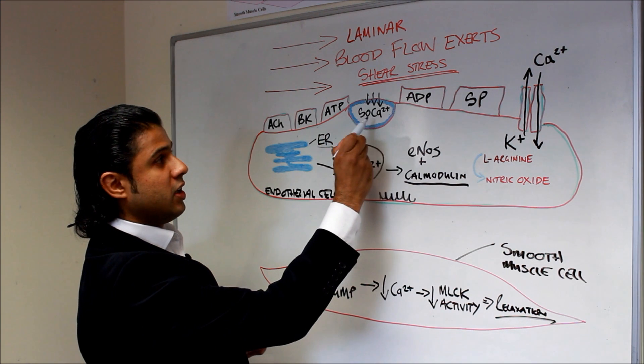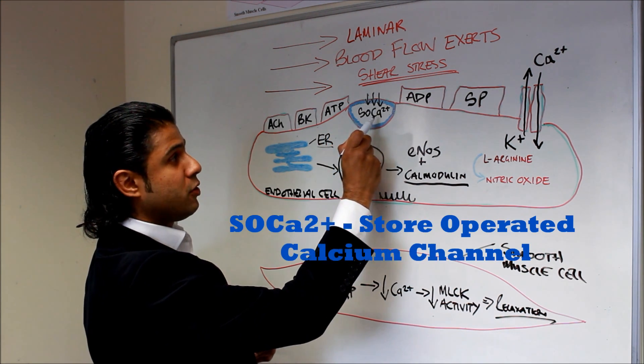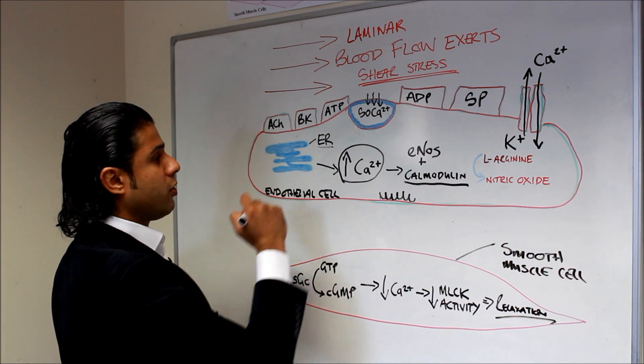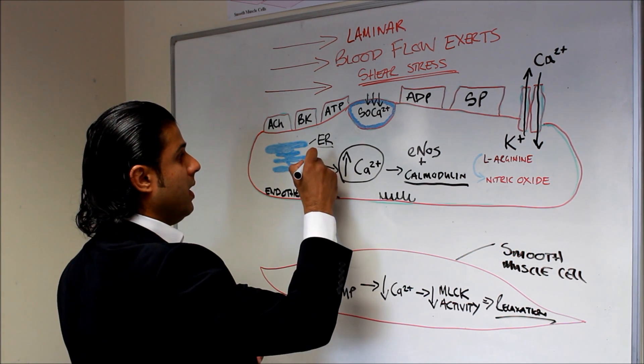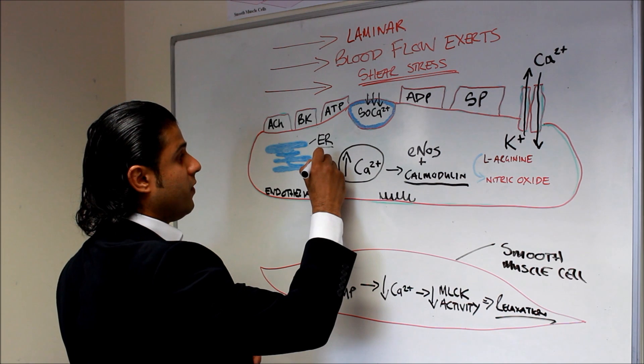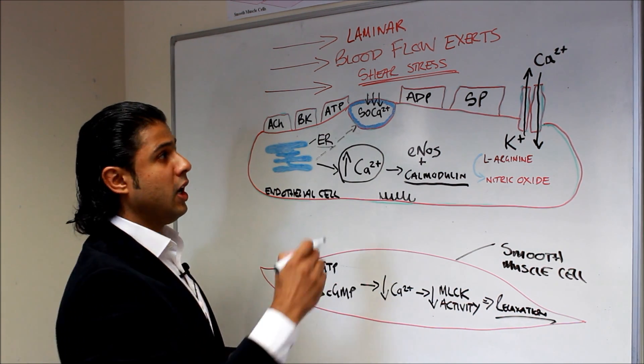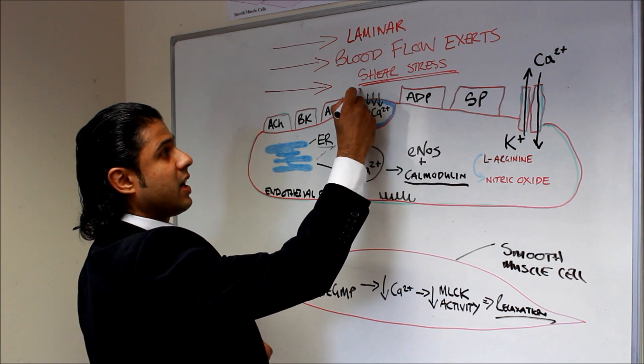The first is SOCA or store operated calcium channels come into play. Now when the endoplasmic reticulum runs out of calcium, it sends a so far unidentified signal to the store operated calcium channel, which then takes extracellular calcium.